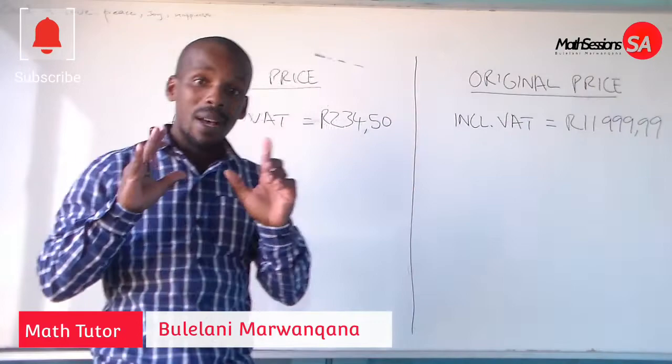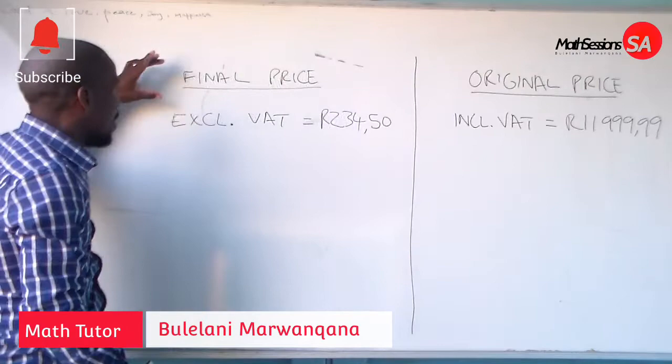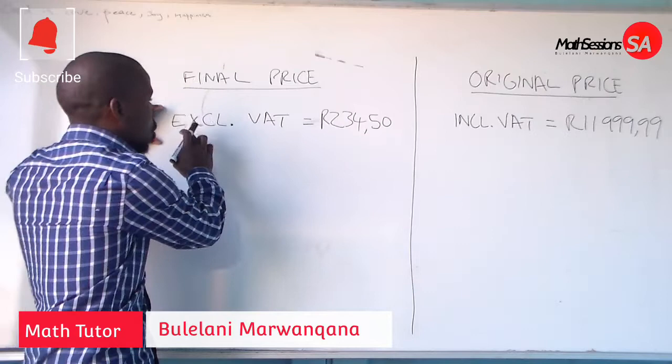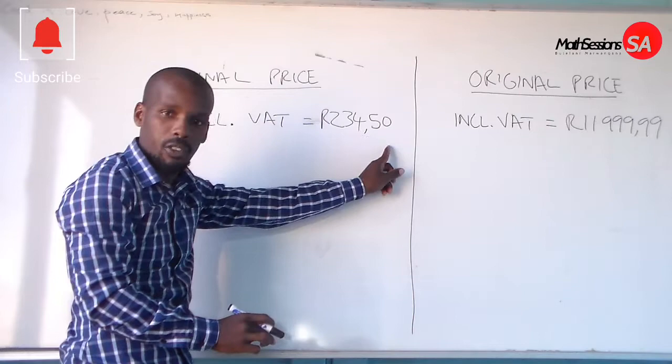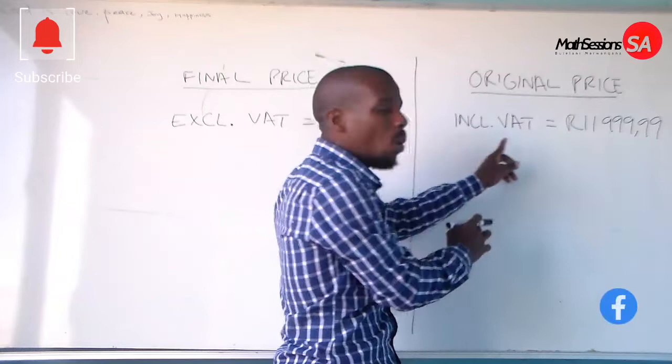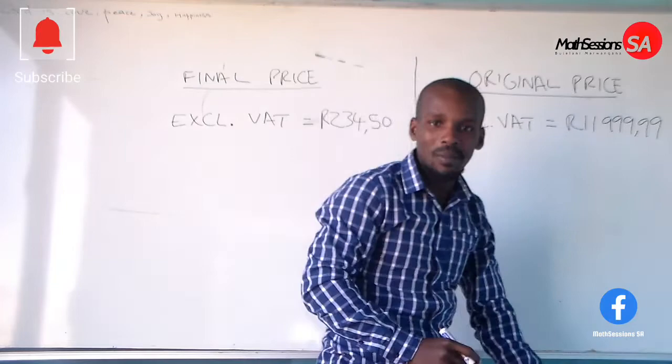We are having two scenarios here. We have a final price to calculate when Value Added Tax is excluded from a price of R234.50. And then there is an original price we have to find when Value Added Tax is included, at R1199.99.